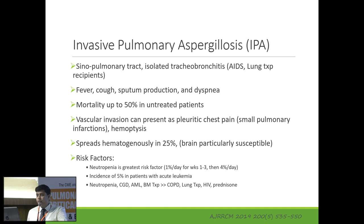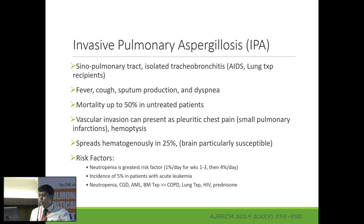Patients who develop invasive pulmonary Aspergillosis typically have severe immune system dysfunction. Neutropenia is the greatest risk factor; incidence is 5% in leukemias. Other risk groups include chronic granulomatous disease, acute myelogenous leukemia, lung transplant recipients, COPD patients, and patients on chronic steroid therapy.